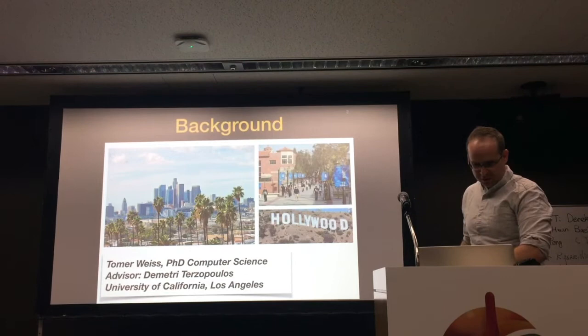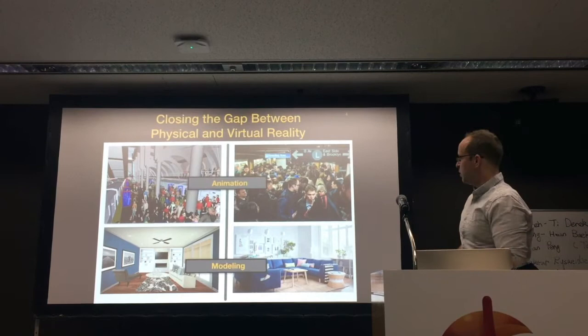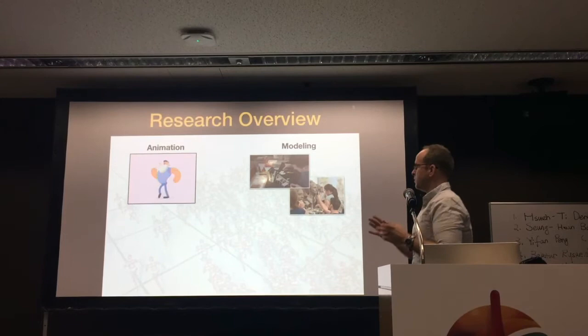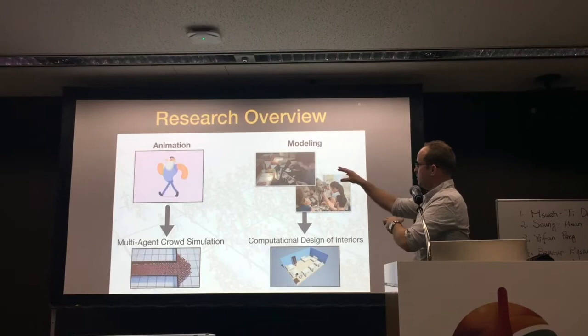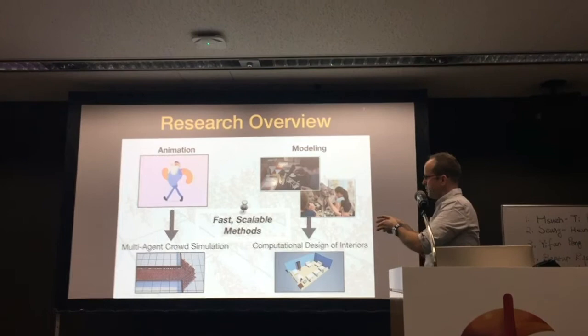The focus of my research is basically bridging the gap between physical and virtual reality. When I talk about bridging the gap, I'm talking about both animation and modeling. Both animation and modeling are kind of critical in computer graphics and CG at large. I'm focusing on crowd simulation under animation, and computational design of interiors under modeling. The thread connecting these two research areas is fast and scalable methods — how can we empower users with fast and scalable methods so they can get where they want to go?